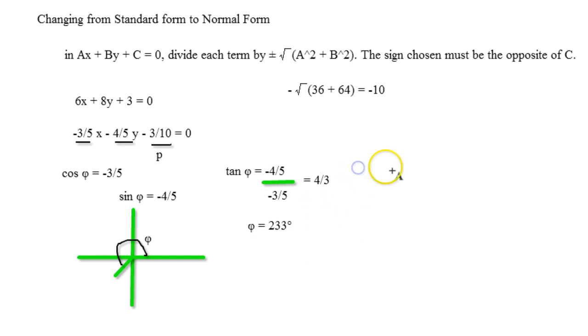So the normal has a length of 0.3 units because remember 3 divided by 10 is 0.3 and the actual phi is going to be approximately 233 degrees. And that's how you go back from normal form or from standard form to normal form. I hope you guys